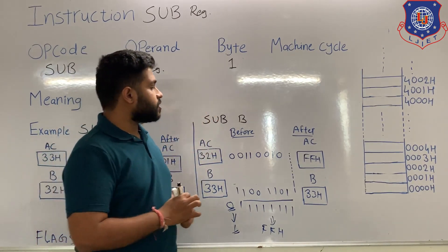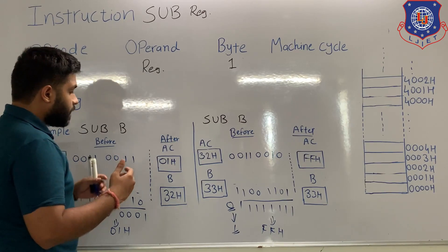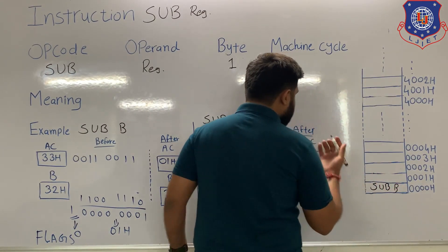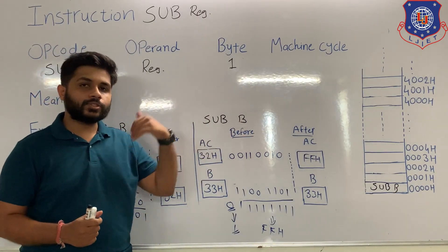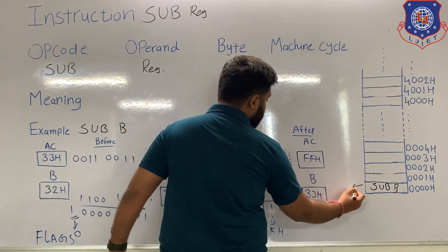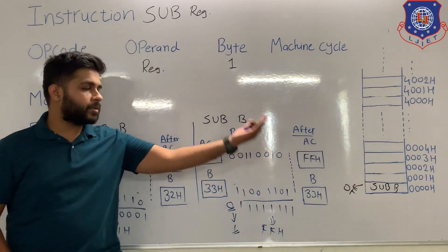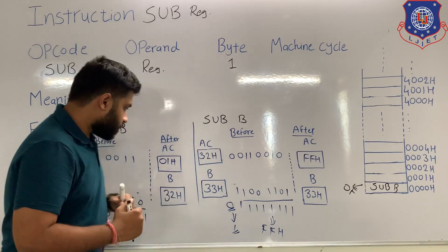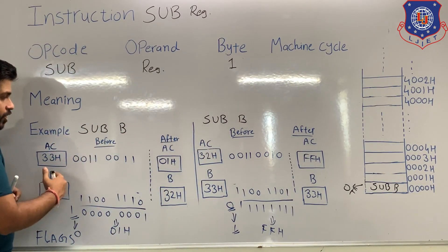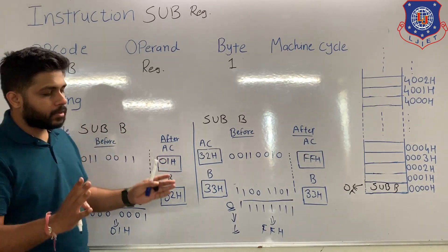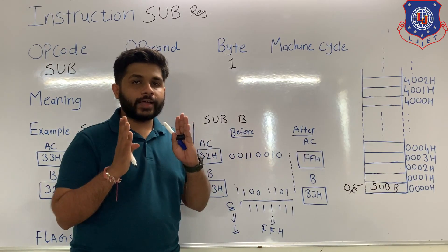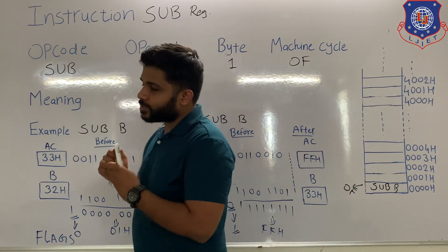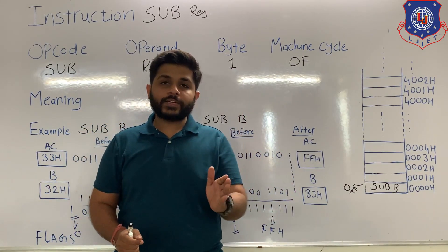Now let's see the machine cycle. Because this instruction is 1 byte, when stored in memory it occupies only one memory location. The processor performs fetch, decode, and execute. To fetch the instruction, the processor performs the machine cycle opcode fetch. During execution, the processor performs subtraction between the register and the accumulator, and the answer is stored in the accumulator — all within the microprocessor. So only one machine cycle is needed: opcode fetch. Because this is an arithmetic instruction, all the flags will be affected according to the result.